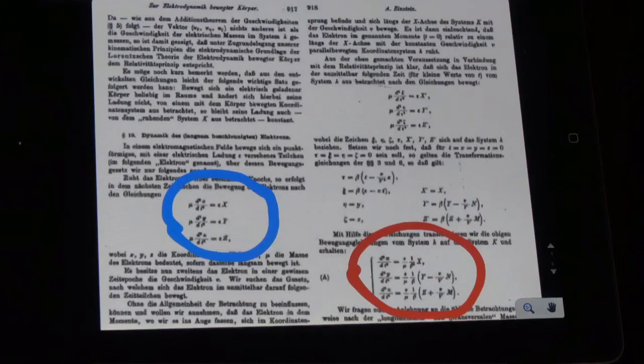As already said, it's an absolute truth that one single body in one single system cannot obey two different laws of motion at the same time as Einstein's relativity derives. Deriving such conflicting result invalidates altogether the whole theory.